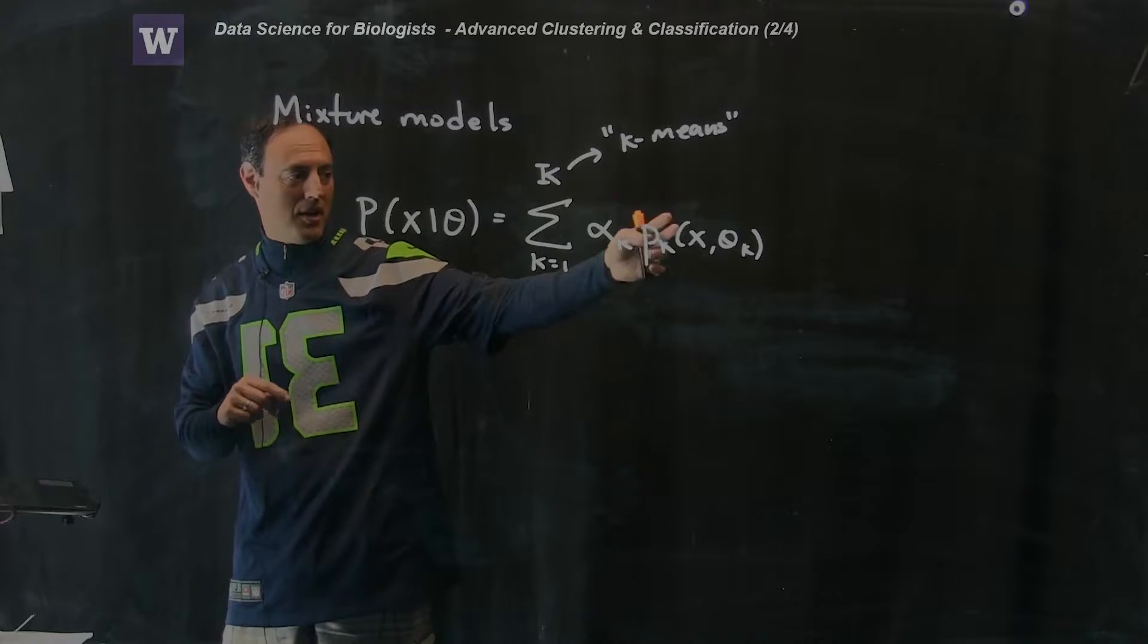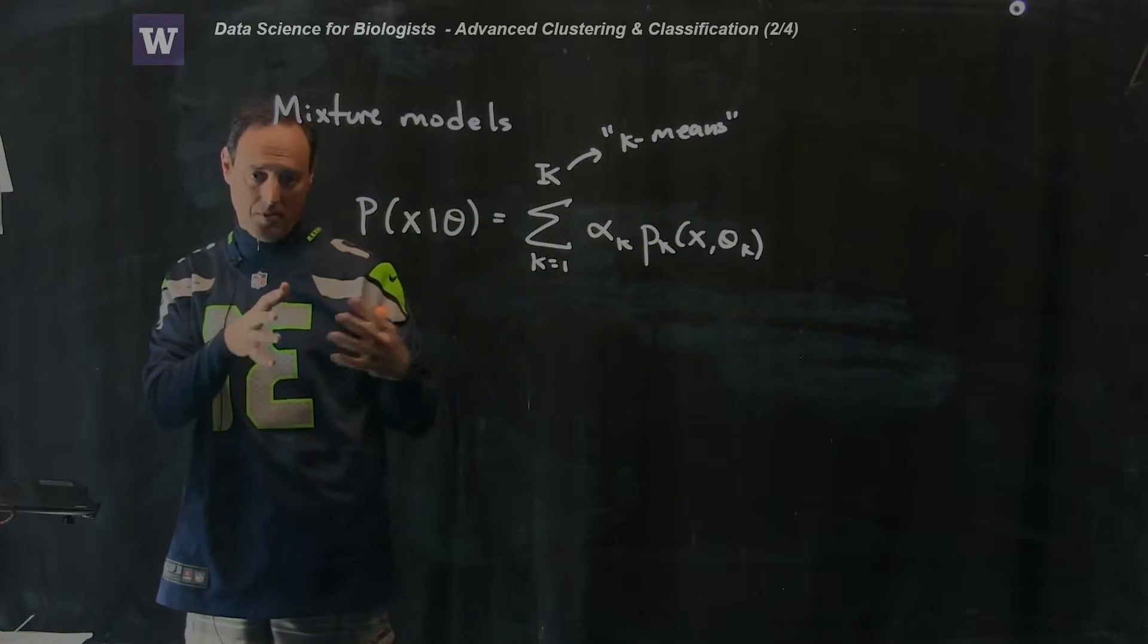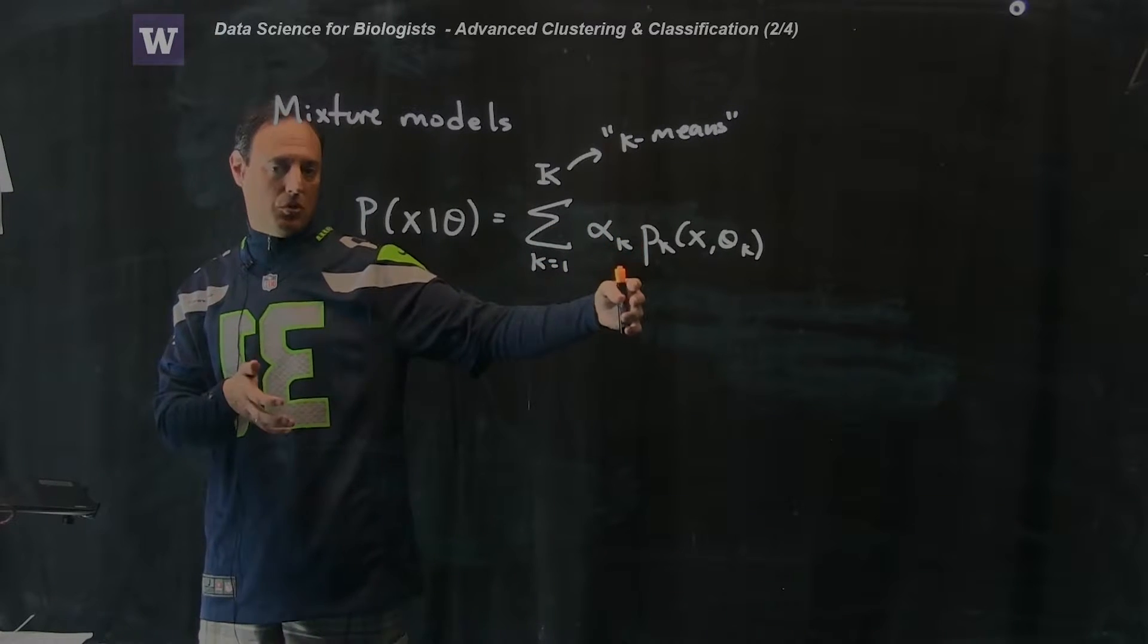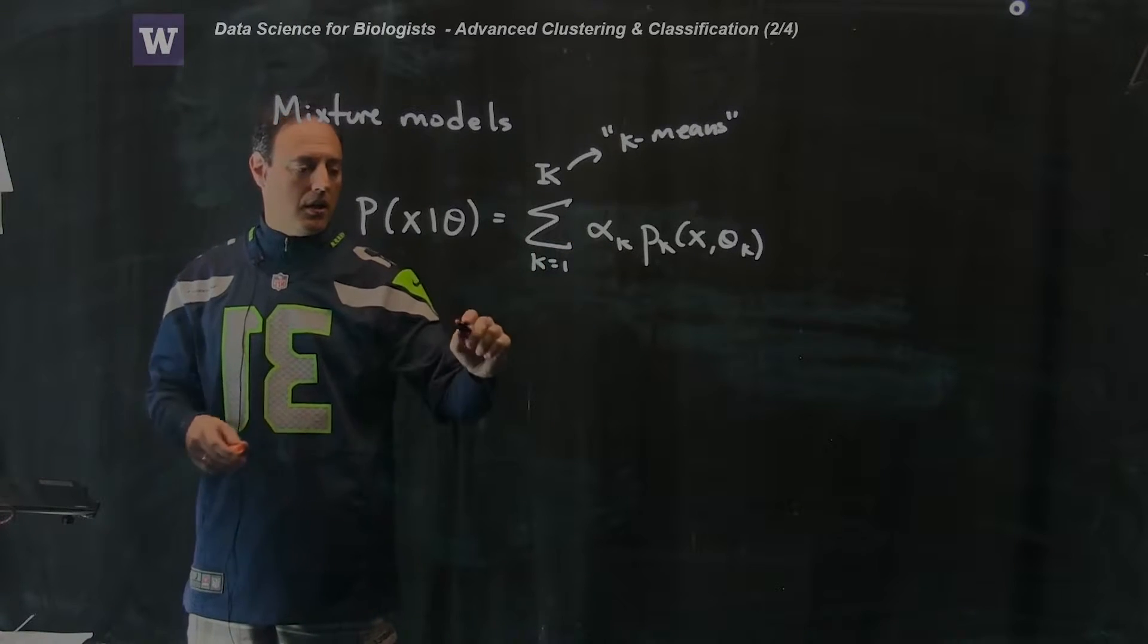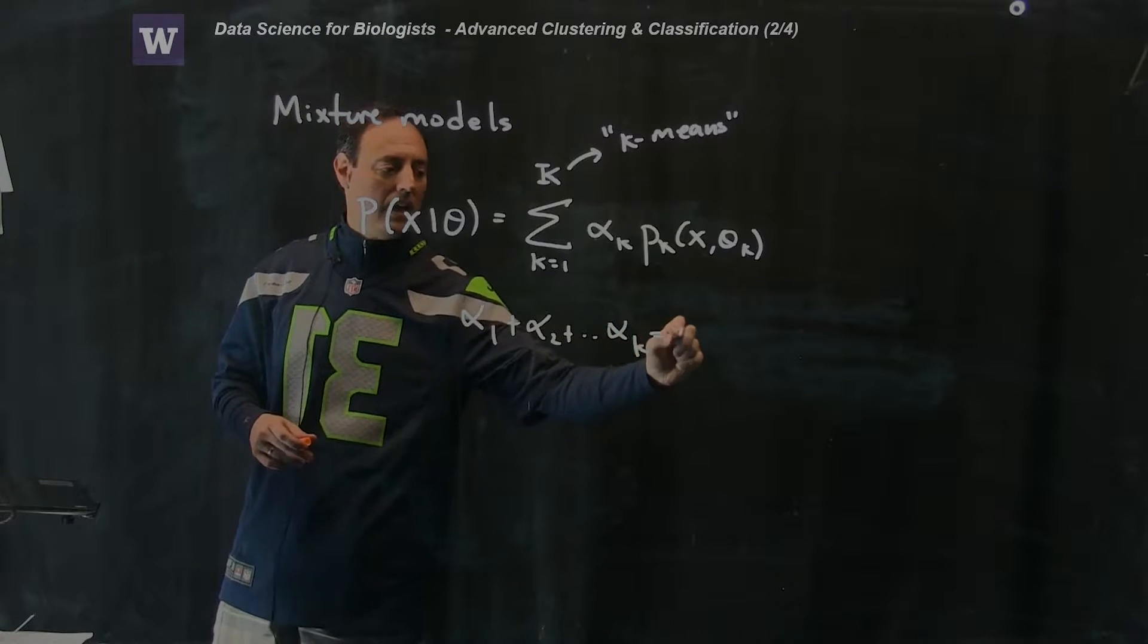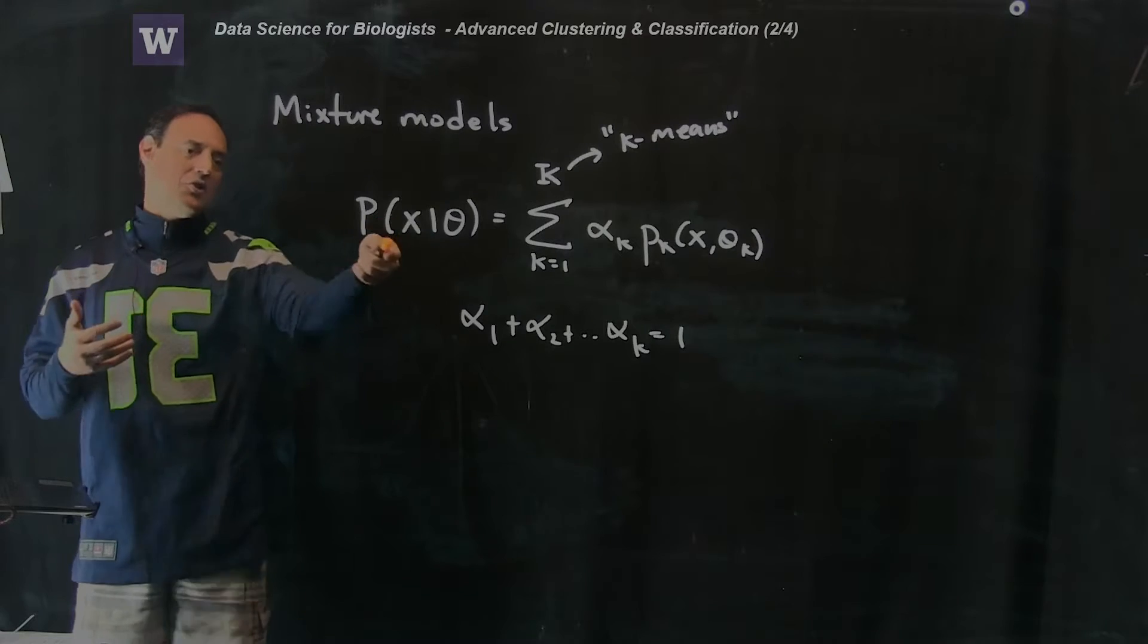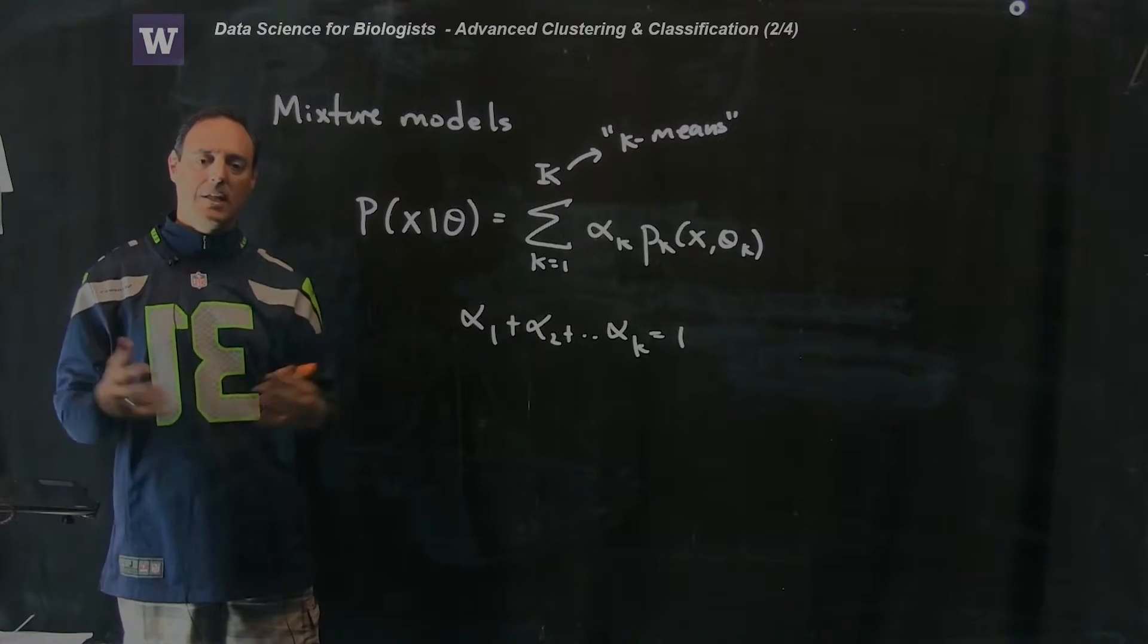Now the most common version of this is called Gaussian mixture models, or GMMs. In Gaussian mixtures, you pick Gaussians. And the Gaussians is parametrized by two variables, a mean and a variance. So if you have two clusters, you'd have a mu1 sigma1 for the mean and variance of one of the clusters, and a mu2 sigma2 for the other cluster. And then alpha here, alpha1 plus alpha2 plus all the way to alphak, has to all add up to one. Otherwise you don't have, because you know that the probability of something has to go from zero to one.